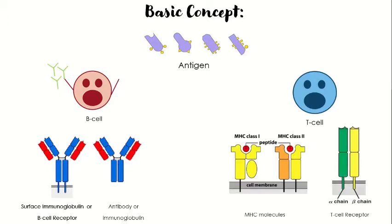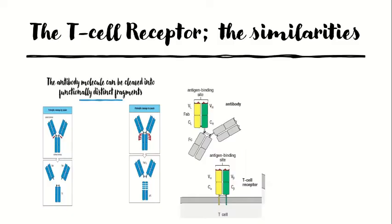T cells recognize the antigen as a small fragment bound to an MHC molecule displayed upon the cell surface. In this section we will discuss how T cells recognize this antigen, and we will look at the exact structure of the T cell receptor, the genes that encode it, and the key similarities and differences between the T cell receptor and the immunoglobulin molecule.